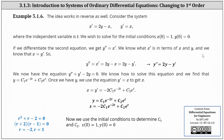The idea works in reverse as well. Consider the system x prime equals 2y minus x and y prime equals x, where the independent variable is t. We wish to solve for the initial conditions x of zero equals one and y of zero equals zero. If we differentiate both sides of the second equation y prime equals x, we get y double prime equals x prime. We know x prime from the first equation equals 2y minus x, and from the second equation x equals y prime. So substituting, y double prime equals 2y minus y prime.